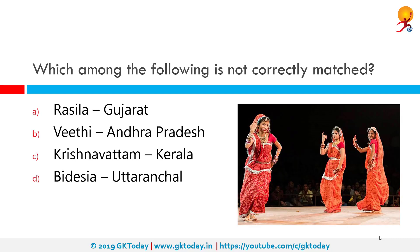Which among the following is not correctly matched? Option A, Rasila to Gujarat, is correct. Vitti to Andhra Pradesh is also correct. These are all art forms. Krishnanattam is to Kerala. However, Videsiya is to Bihar and not to Uttaranchal. Videsiya is a popular form of dance drama that originated in 20th century folk theatre and is prevalent in the Bhojpuri-speaking region of Bihar.